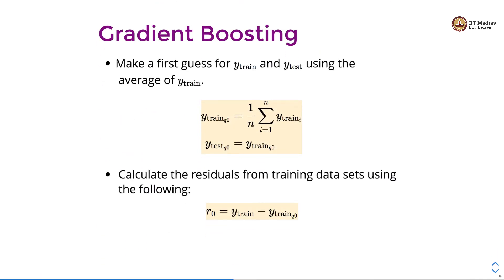Let's look at gradient boosting. Gradient boosting first makes a guess for y-train and y-test using the average of y-train. We simply assign the training label to the point based on the average of the training label of the entire dataset. For the test set we apply the same label obtained by averaging on all the training data.